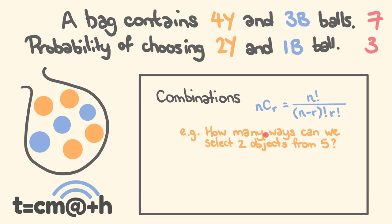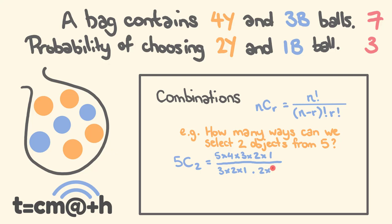How many different ways can we select two different objects from a total of five? We'd work this out as 5C2, following the rule: n factorial — that's 5 factorial, 5×4×3×2×1 — all going over (n−r) factorial, so 5−2=3 factorial, which is 3×2×1. This is multiplied by r factorial, which is 2 factorial, 2×1. The 3, 2, and 1 cancel out, leaving 5×4 over 2×1.